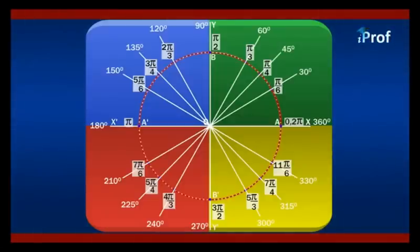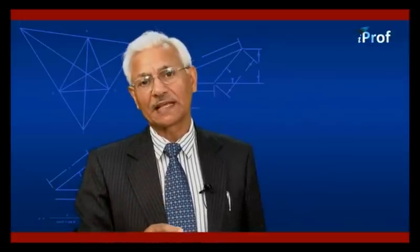These angles have been taken in the anti-clockwise direction, which are taken to be positive angles. Having explained the positive angles in the anti-clockwise direction, if we go in the opposite direction — that is, the clockwise direction — the angle will automatically be negative.